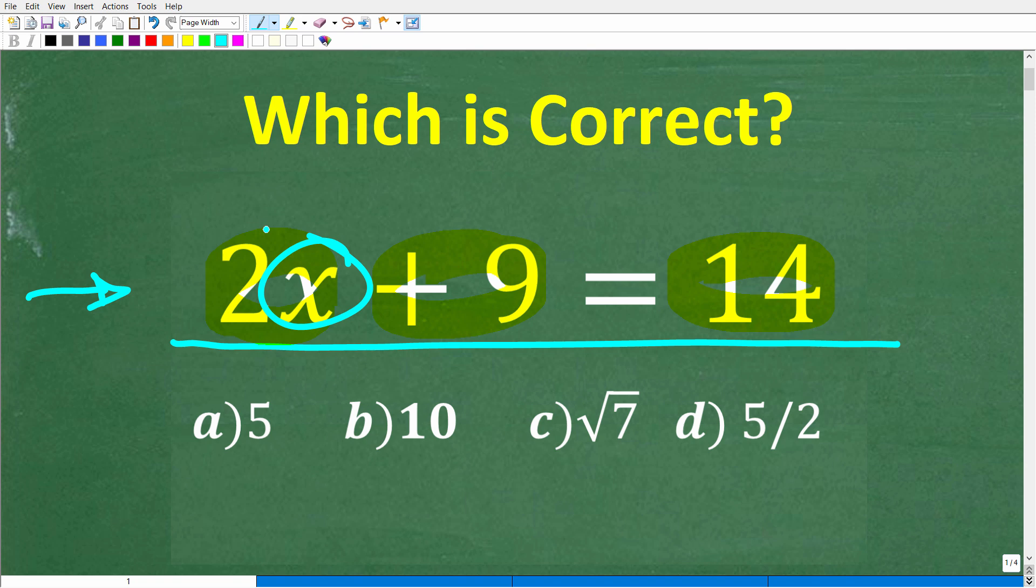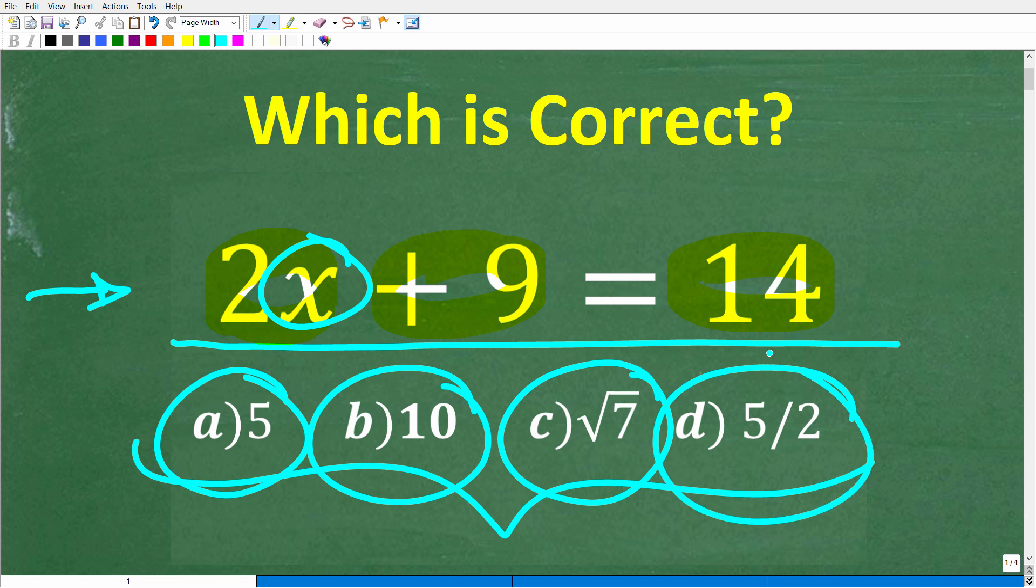Now, x is equal to one of these answers right here because we have a multiple choice question. So, a is 5, b is 10, c is the square root of 7, and d is 5 halves.